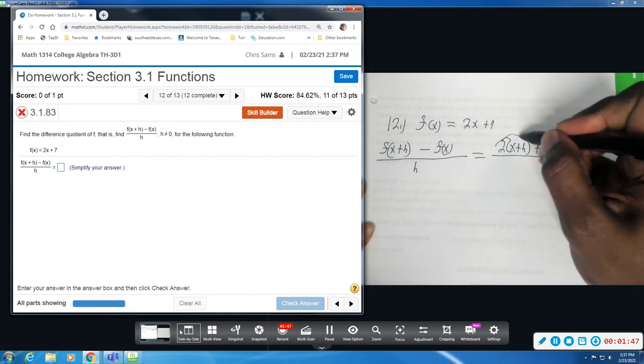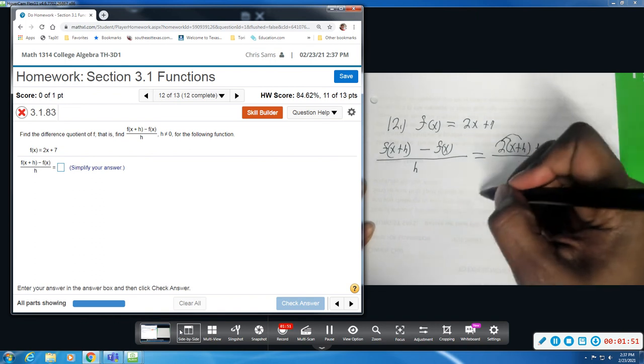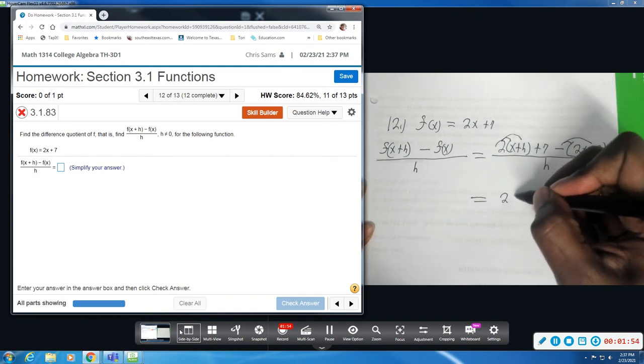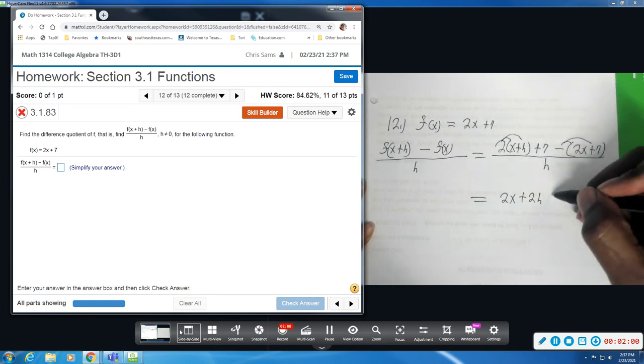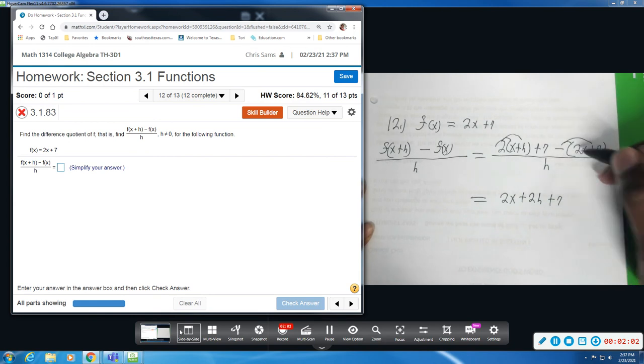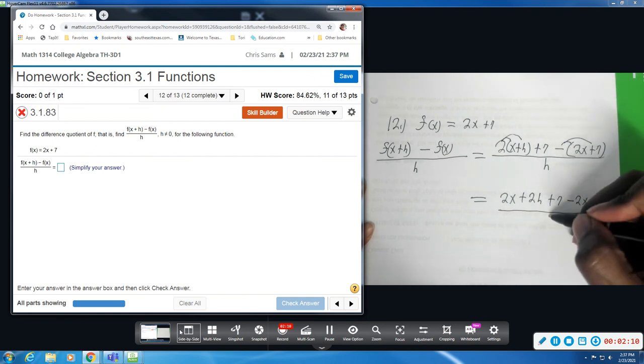We are going to distribute 2. We are going to distribute this negative. So, 2 times x is 2x. 2 times h plus 2x plus our 7 and then minus 2x and then minus 7 all divided by h.